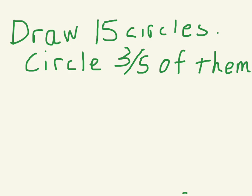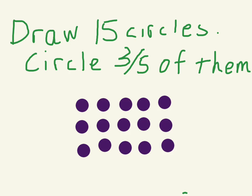For number five, you're supposed to draw fifteen circles and then circle three-fifths of them. So first draw yourself fifteen circles. We need to do three-fifths of the circles. This five here basically means the first thing you need to do is put them into five groups. Can you make these circles into five even groups? Then this three here is how many of those groups you should circle total — so you have five groups and then circle three of those five groups. That should help you out.